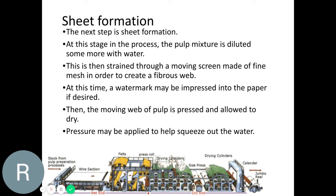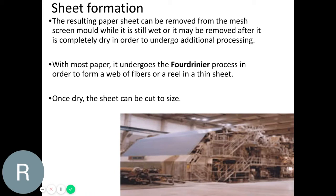We then have to create the sheets of paper. The pulp mixture is diluted with water and strained through a moving screen made of fine mesh — a bit like a big colander or sieve — in order to create a big fibrous web. That web is then pressed between big rollers, which removes all of the water, pressing the pulp over and over again to remove the water and create a thin sheet of paper. That big thin sheet is then wound around rollers, giving a huge spool of paper before it's cut into the correct size. When dry, that sheet can be cut to size into your stock forms — A4, A3, A2, etc.